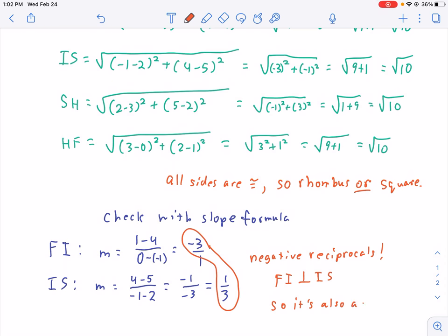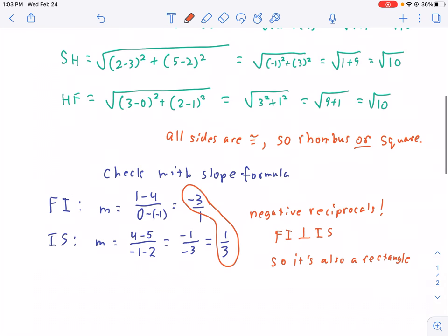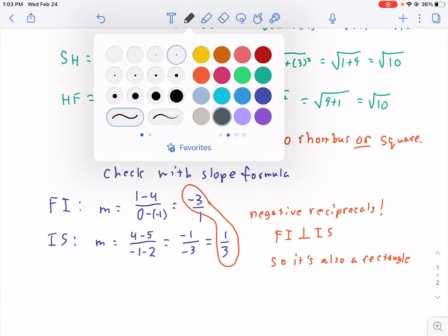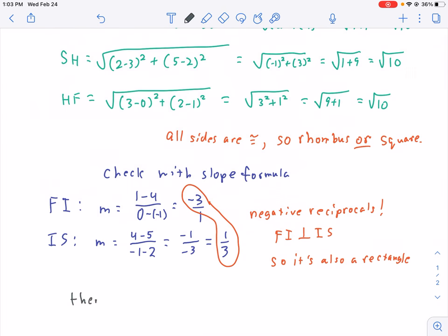So, it's also a rectangle. Therefore, the most precise name for FISH is square. Hope that was helpful.